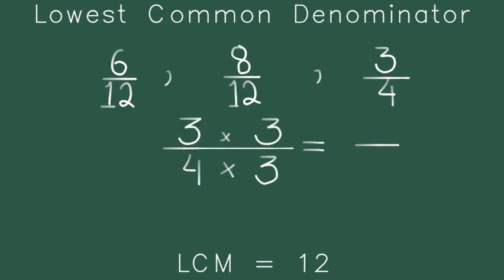Now let's take the third fraction, 3 by 4. Multiply it with 3 as we previously discussed. 3 times 3 is equal to 9. 4 times 3 is equal to 12. I'll put it there.